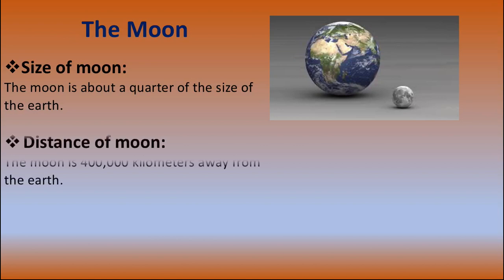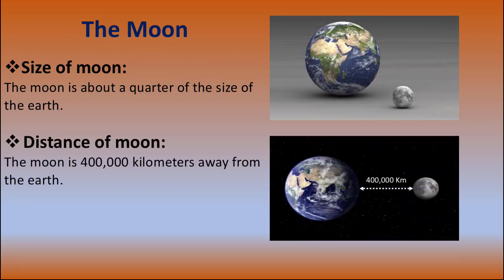Now, the distance of the moon from the Earth. The moon is four hundred thousand kilometers from the Earth. You can see the distance between the moon and the Earth is four hundred thousand kilometers. The moon moves around the Earth and it takes some days to complete the circle.